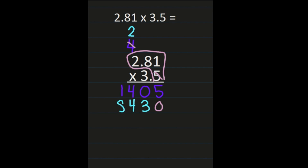I'm not going to do anything with my decimal yet. I'm going to go ahead and add, just like if I were multiplying whole numbers. So 5 plus 0 is 5, 0 plus 3 is 3, 4 plus 4 is 8, and 1 plus 8 is 9.